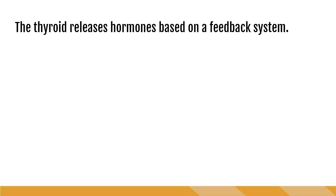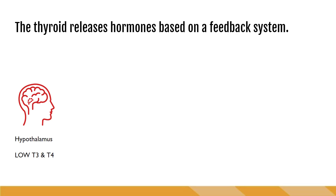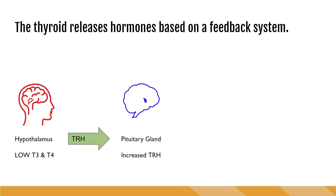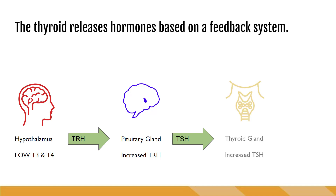As with many endocrine organs, the brain and the organs talk to one another via the bloodstream, so the thyroid releases hormones based on a feedback system. The feedback loop starts when the hypothalamus detects that there are low levels of thyroid hormones T3 and T4. The hypothalamus then releases thyrotropin-releasing hormone, or TRH. The increase of TRH will then tell the pituitary gland to produce thyroid-stimulating hormone, or TSH. The TSH will travel through the bloodstream and eventually interact with the cells of the thyroid gland, telling the thyroid to make T3, triiodothyronine, and T4, thyroxine.